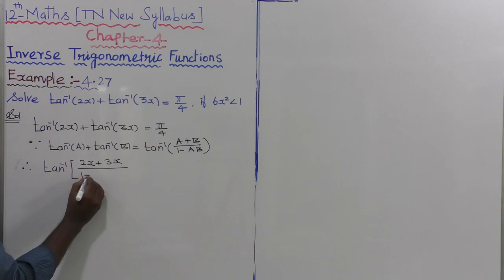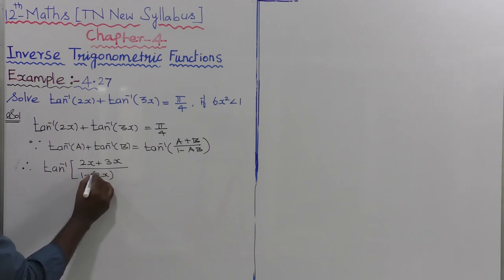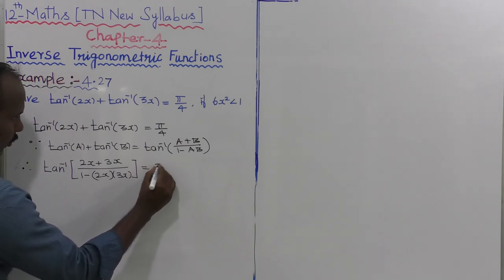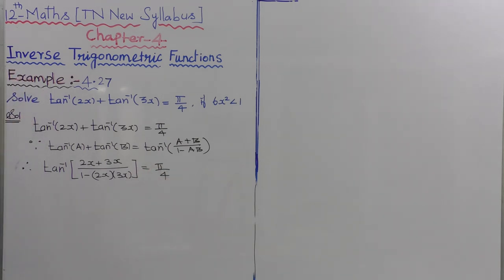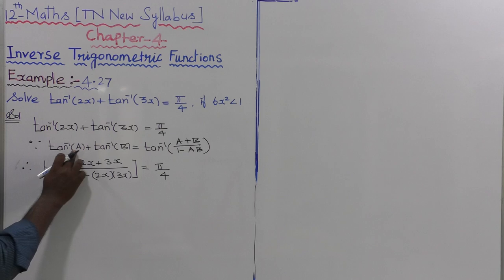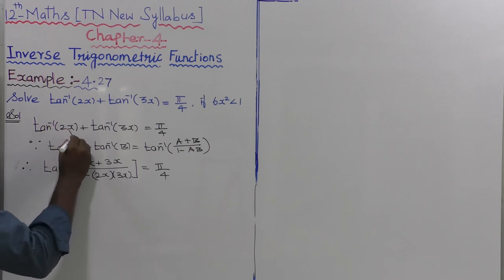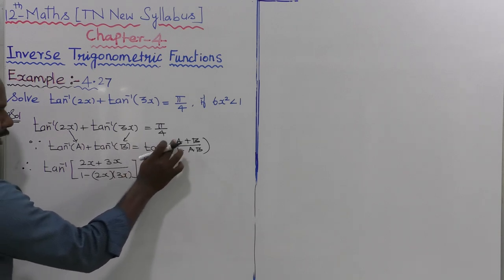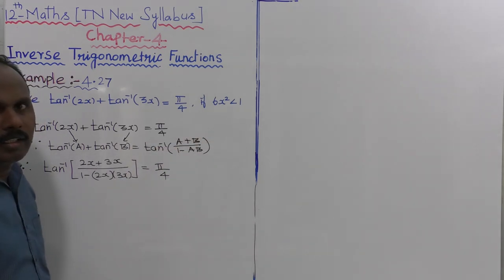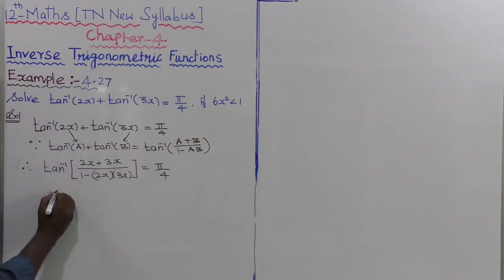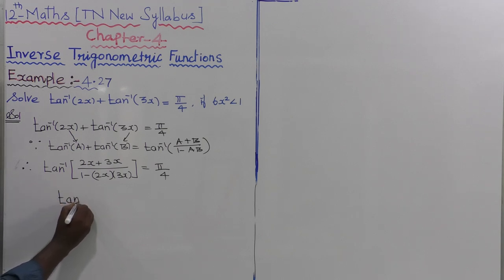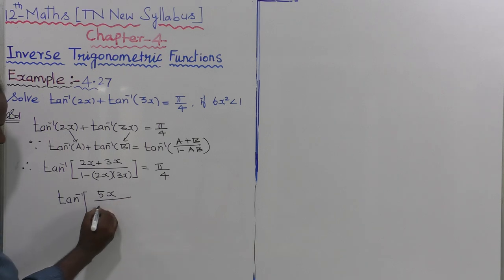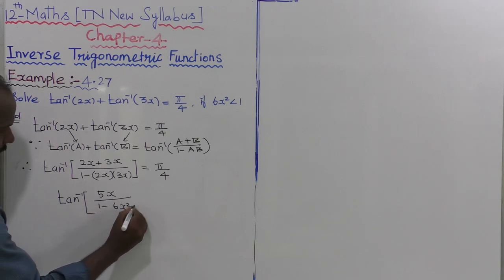Applying the formula with a equal to 2x and b equal to 3x: tan inverse of (2x plus 3x) divided by (1 minus 2x times 3x) equals pi by 4. The numerator is 5x and the denominator is 1 minus 6x squared.